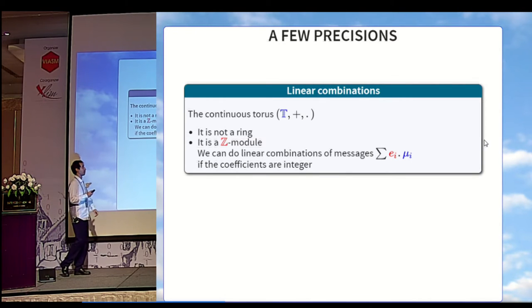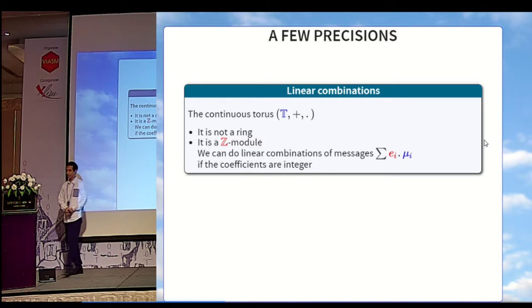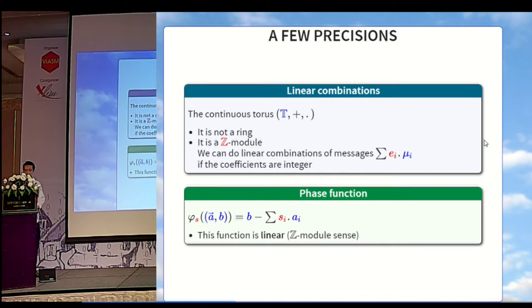Just a few precision about our definition. Our message space is the continuous torus, which is a group, but which is not a ring. It makes no sense of multiplying two real numbers modulo one. However, it is a z module, which means that you can write linear combinations of messages, provided that each of the coefficients of the linear combinations are integer. You can also note that the phase function, b minus sum of si ai, which is used at the beginning of the decryption, is linear if we take this definition. So, linear in a z module sense.